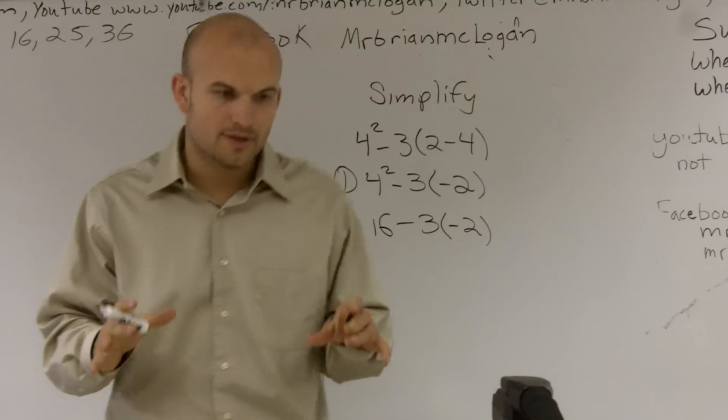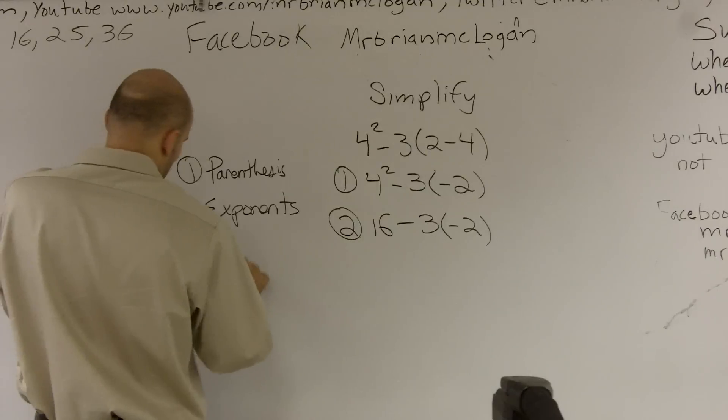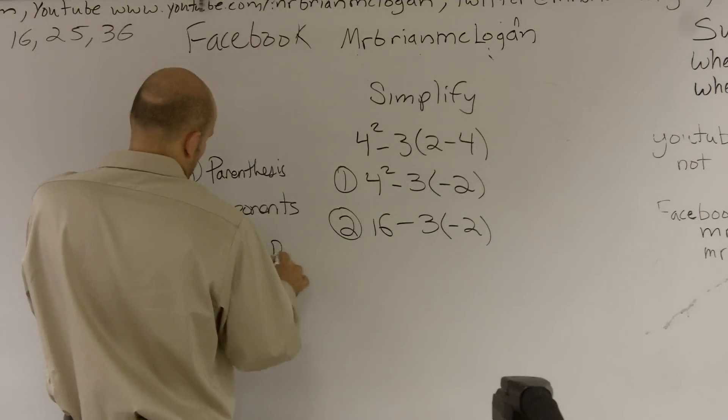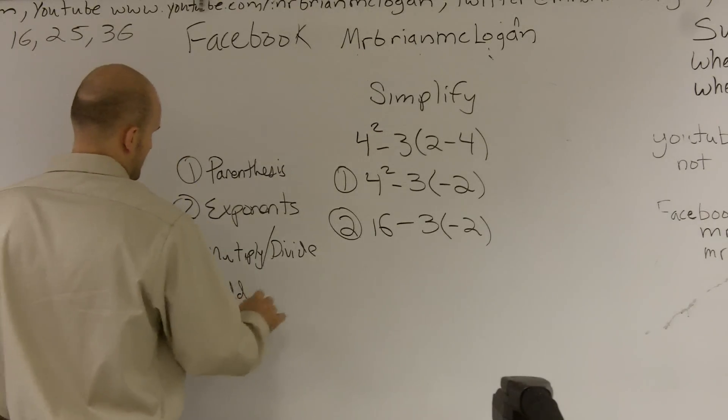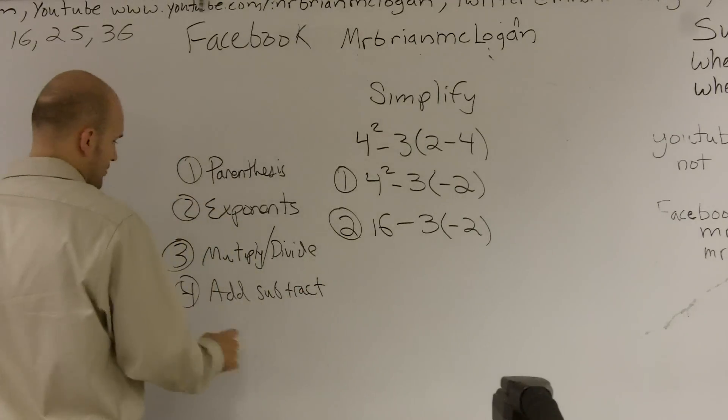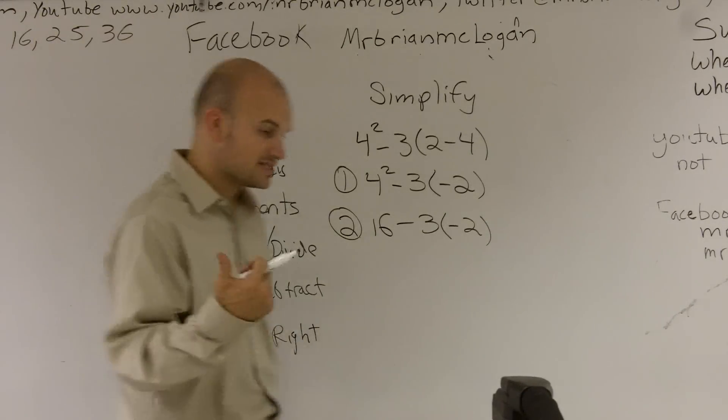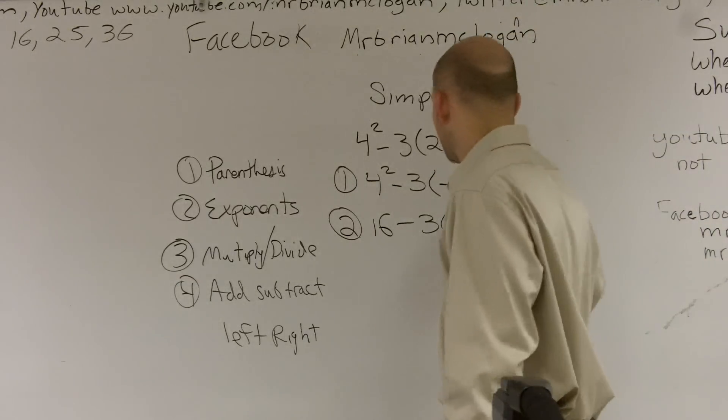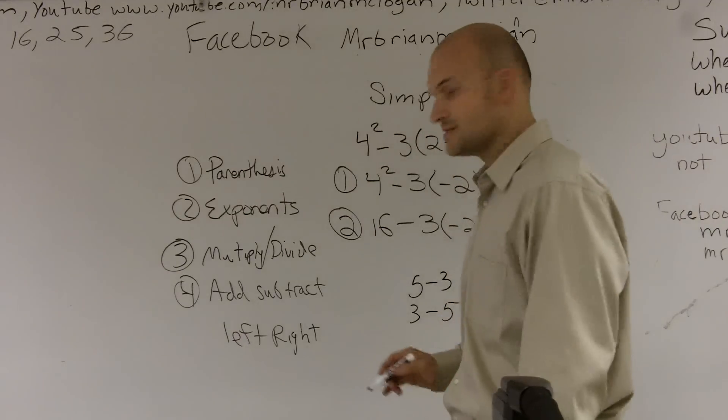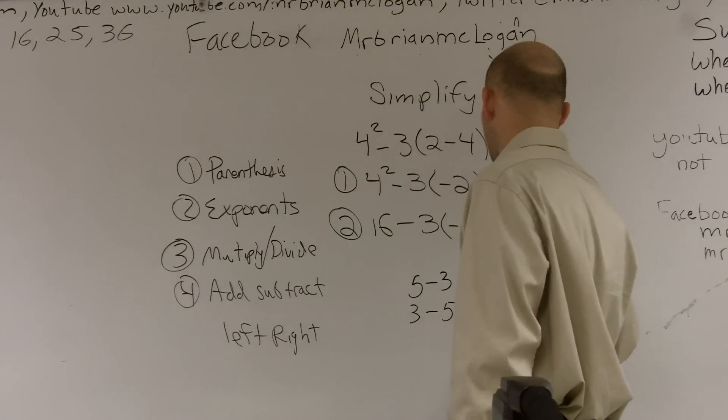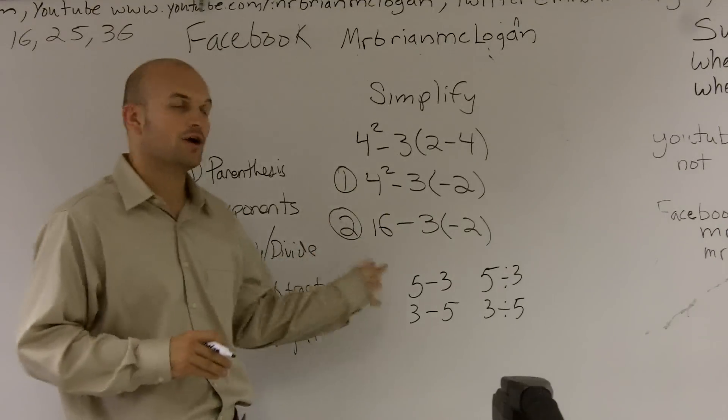Now here's the biggest problem or mistake that students make is the next one is multiply divide. And then the last one, I'm going to put these together, is add subtract. And these two, it's important for you to go left to right. And the reason why is because division and subtraction order matters, right? It's a big difference if you do 5 minus 3 or 3 minus 5. Same thing with 5 divided by 3 and 3 divided by 5. So when you're doing division and subtraction, you really got to make sure you always work left to right.